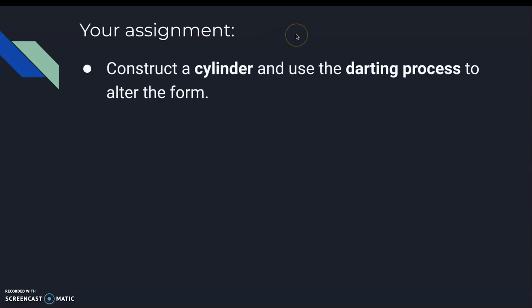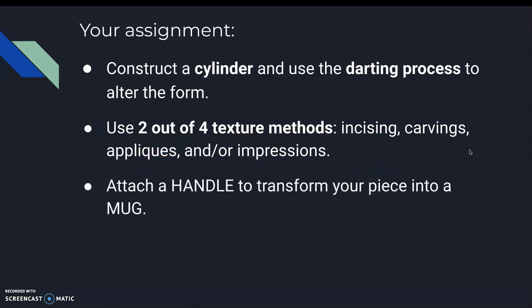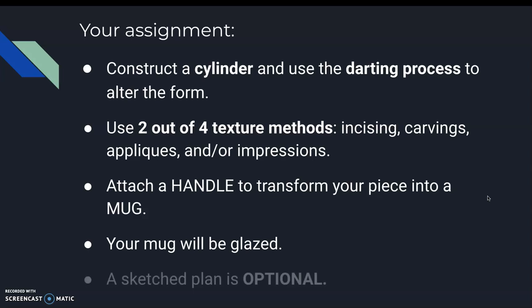So what is your assignment? You're going to construct a cylinder and then use the darting process to alter the form. You'll need to use texture — at least two out of the four texture methods, such as incising, carving into the surface, or adding appliques and impressions. You're going to attach a handle to transform your piece into a mug, and there are multiple ways to make a handle. Your mug will be glazed. A sketched plan is optional — if you feel better having one so you know what you want to do, definitely make a sketch.